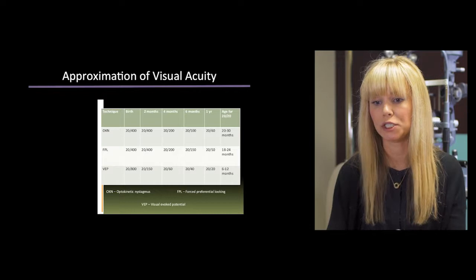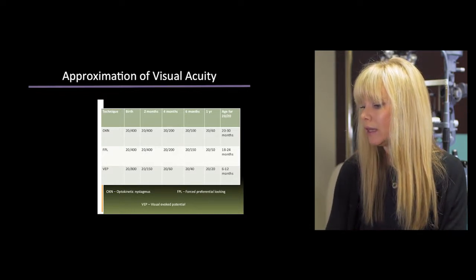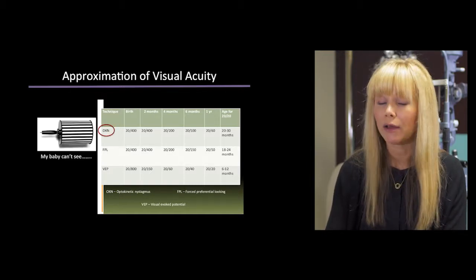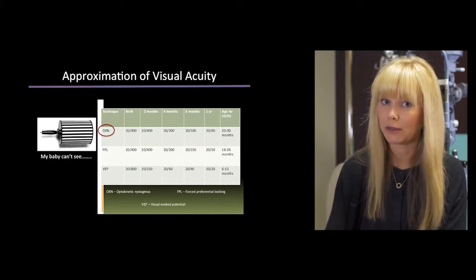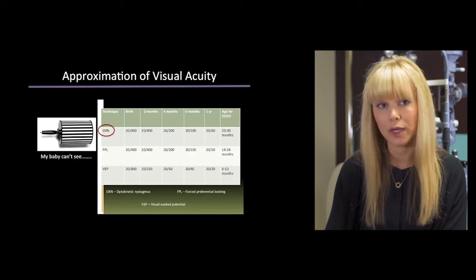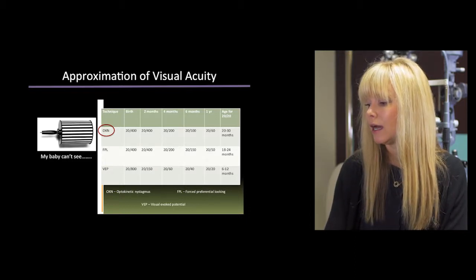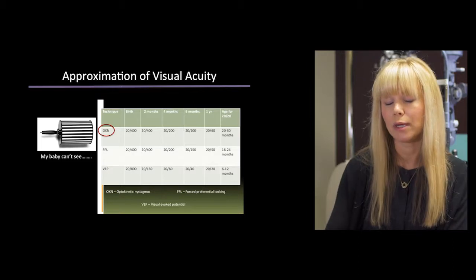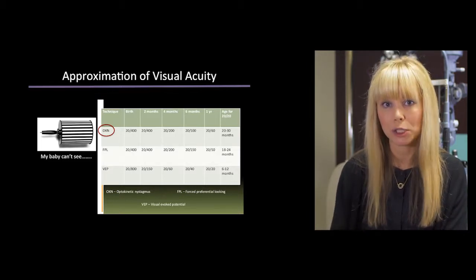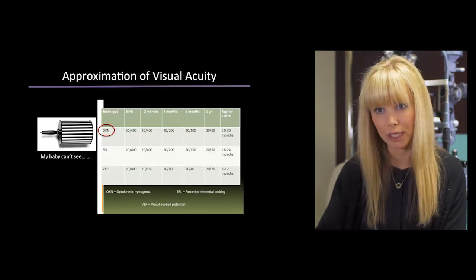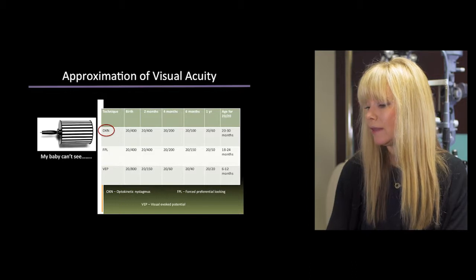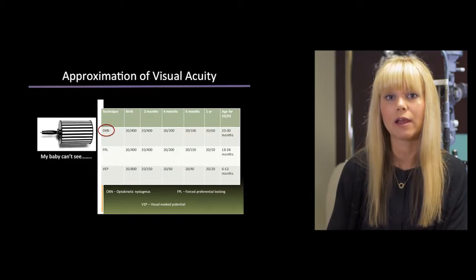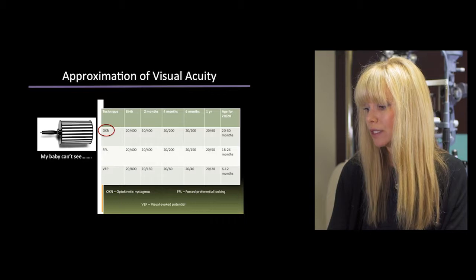When a child isn't tracking and parents are worried they can't see, one approach is using an OKN drum. If the child tracks the OKN drum, we estimate they have approximately 20/200 to 20/400 vision reliably. As the child gets older, we can also estimate that improved vision is present as they're able to track the drum at finer stripe widths. This can be very helpful as an approximation of actual visual acuity.